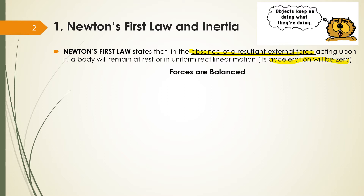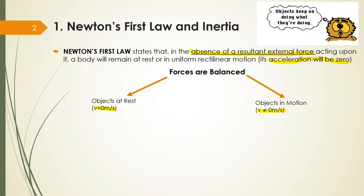If I have two forces that are balanced — two forces that have the same intensity on both opposite sides — I have two options. The object can stay at rest, meaning the velocity will be zero, or the object is in motion with a velocity different from zero, but in that motion I'm going to have the same velocity throughout. If I have an object at rest, I have no acceleration — acceleration is zero. But if I'm in motion, I can also have acceleration zero.